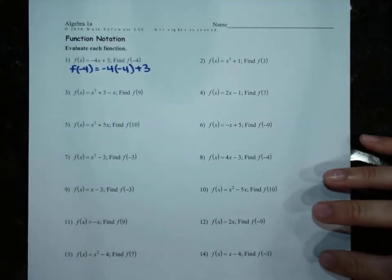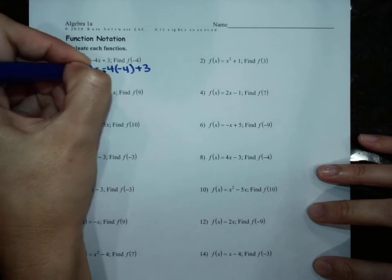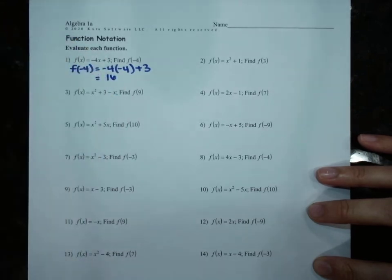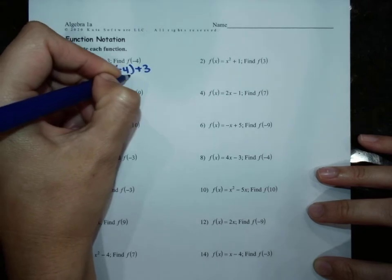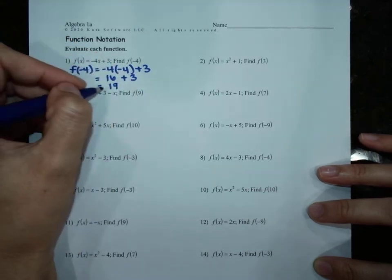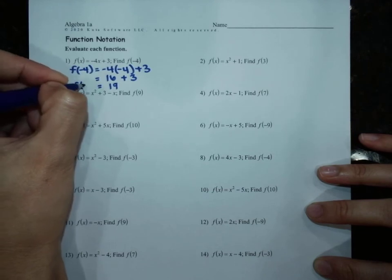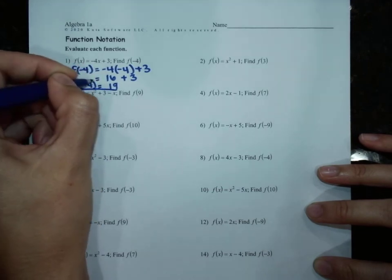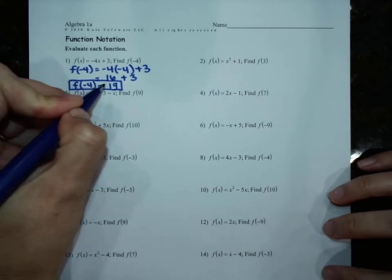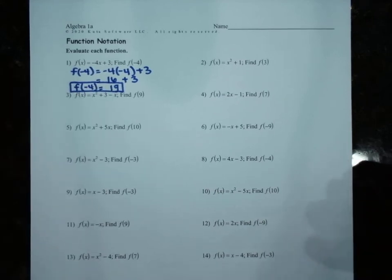And then we are going to simplify. So we have negative 4 times negative 4, which is positive 16. And we have plus 3, which is 19. So f of negative 4 equals 19. So when our input is negative 4, our output is 19.